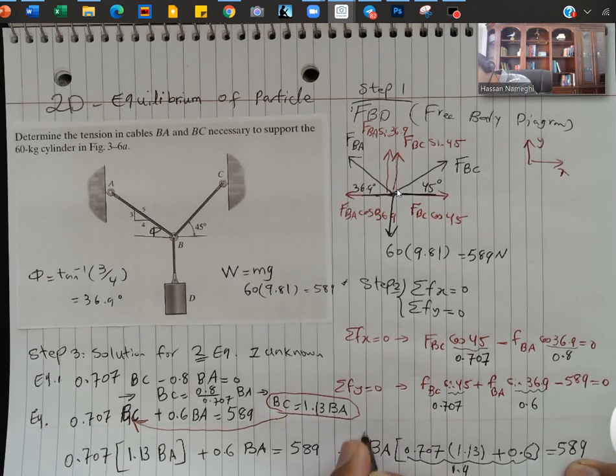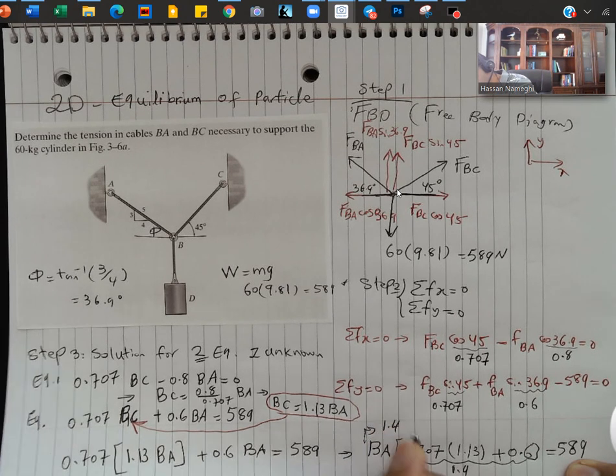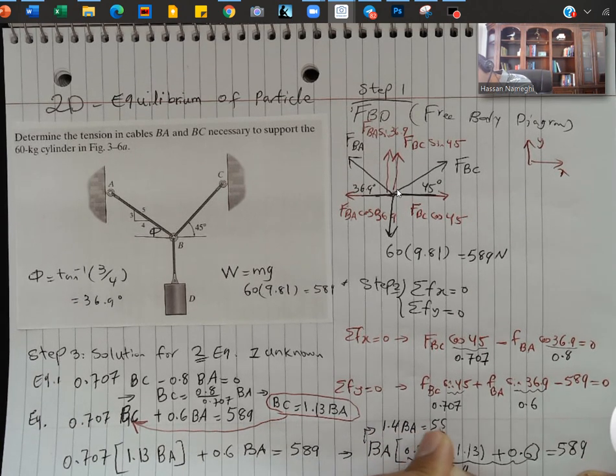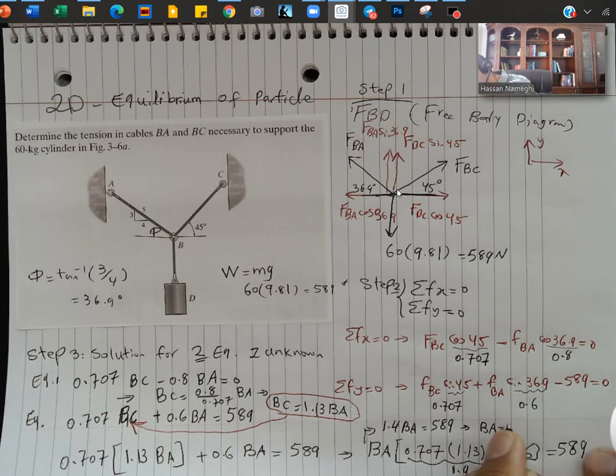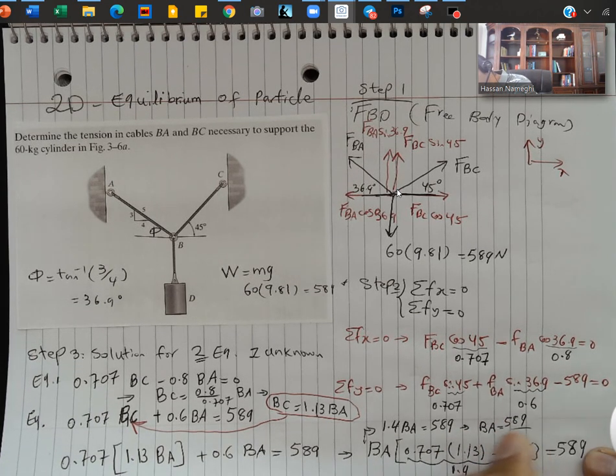So I have 1.4 BA. So the equation will be like this: 1.4 BA is equal to 589. From here, BA would be equal to 589 over 1.4.